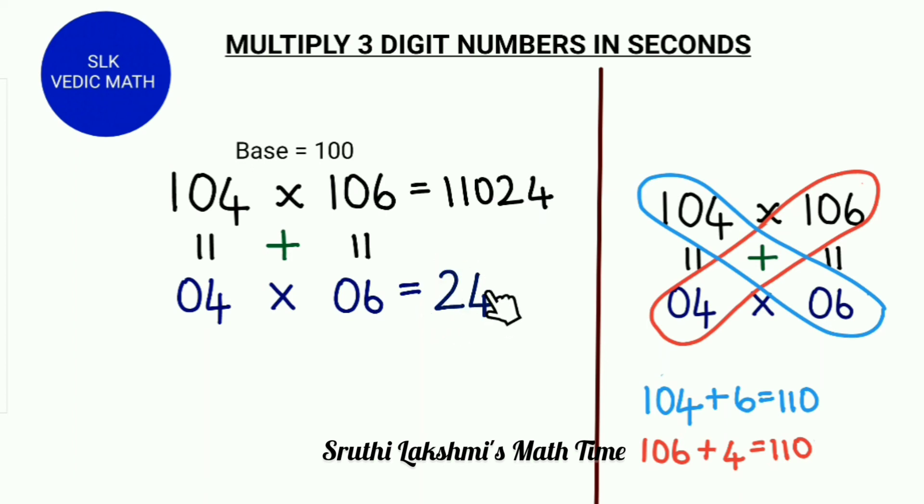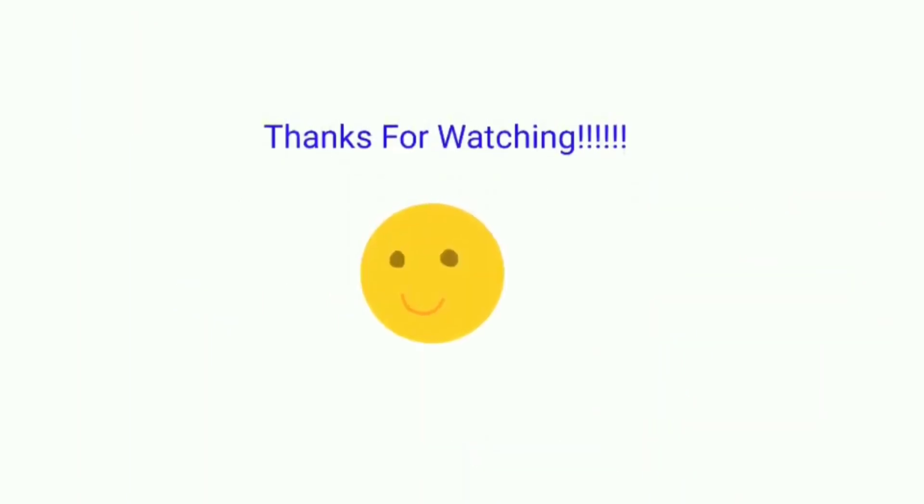Then we write the 24 we got behind. So 104 into 106 is 11024. See how easy this method is. Thanks for watching.